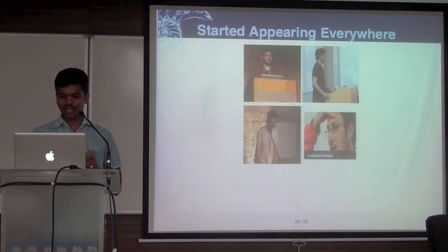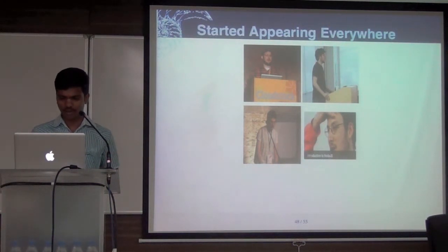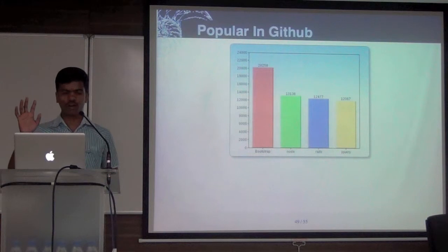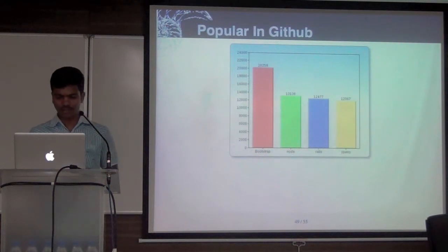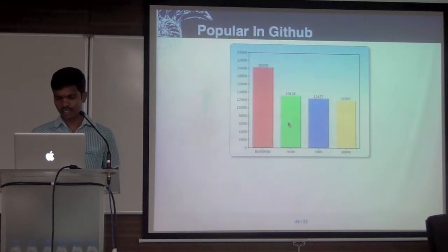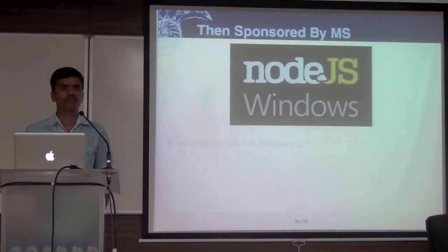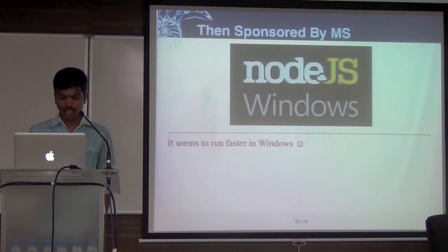A lot of people started jumping on to it. It went to Yahoo, it went to Microsoft, Google — and it's been presented everywhere. Right now it's very popular on GitHub. Bootstrap, for example, is built using Node.js. Microsoft came forward and sponsored the Windows port of Node.js — and it seems to run faster on Windows.